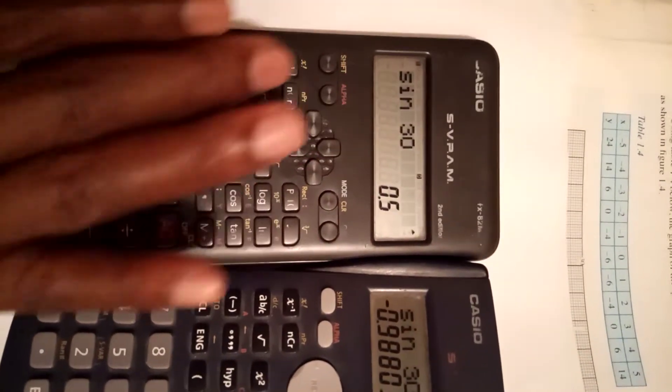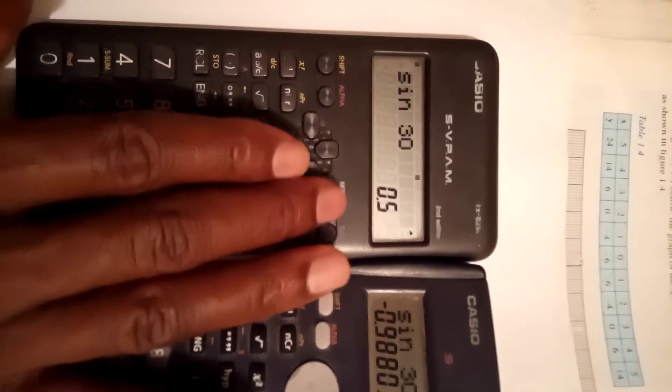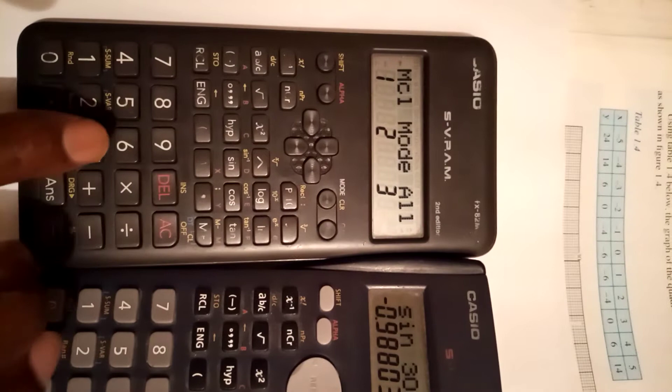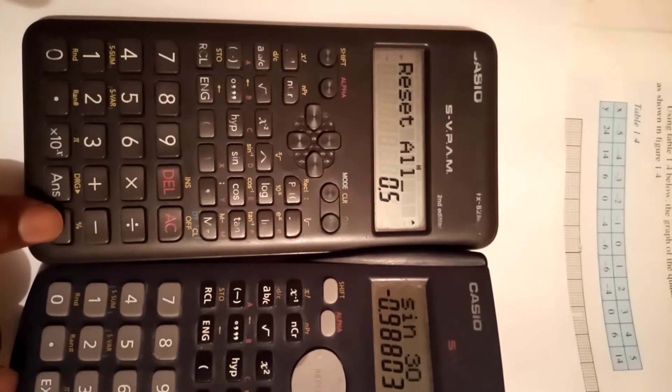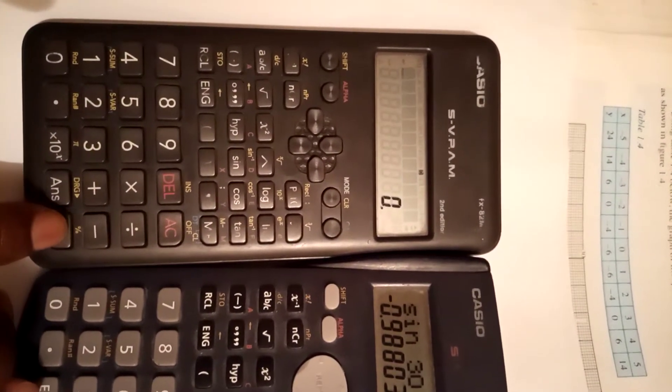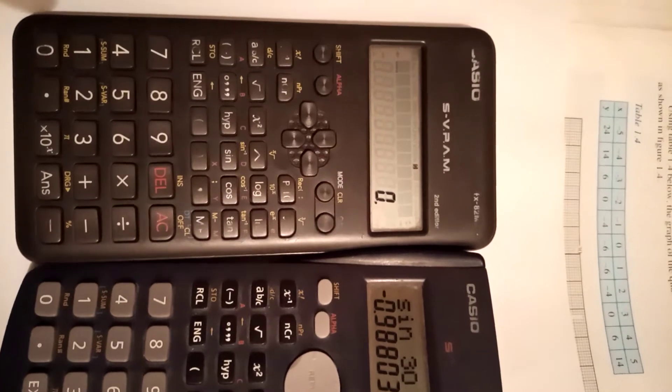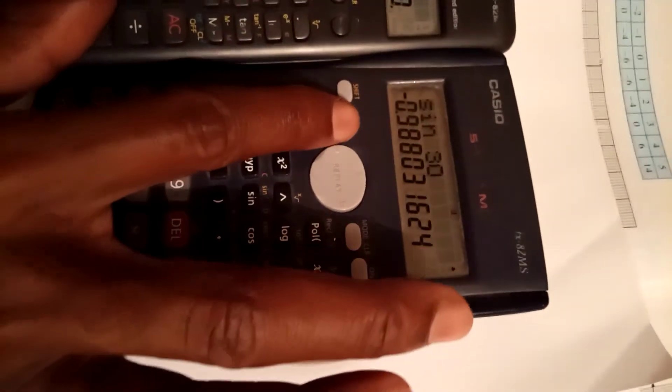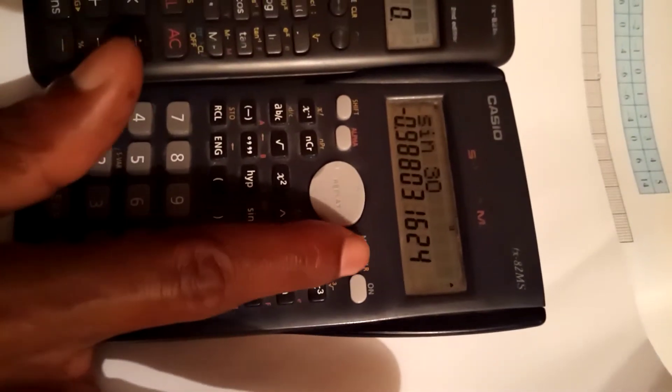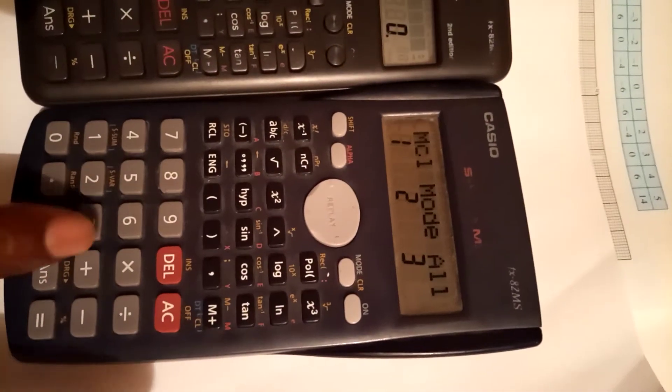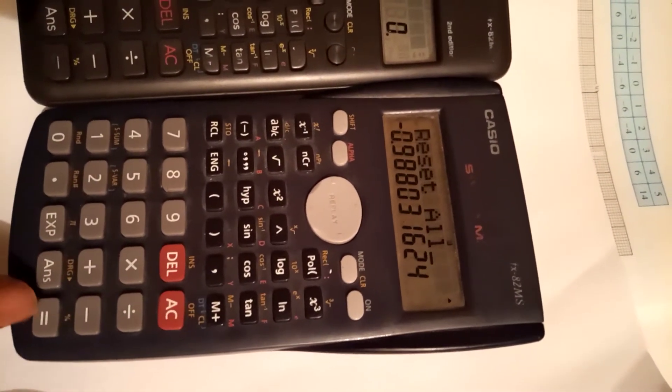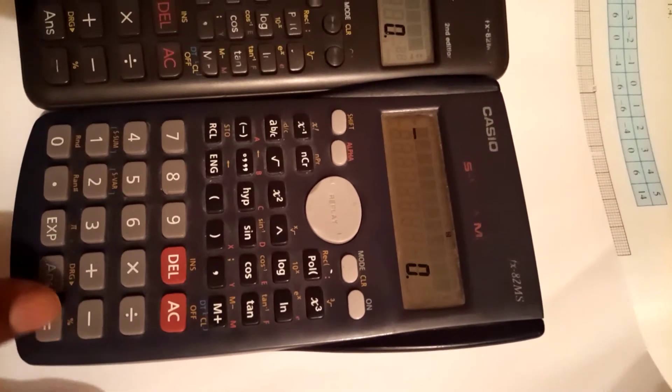So to reset, we have shift and then you go to mode and then option three, then you press equals twice and it takes you back to zero. Here I also have to shift, then mode, then option three, then equals severally.